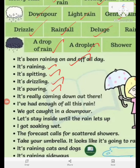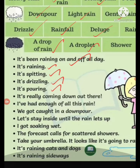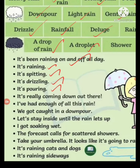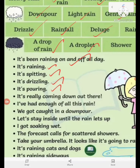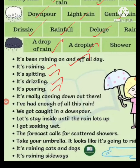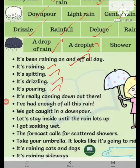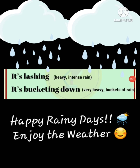'The forecast calls for scattered showers — take your umbrella.' 'It looks like it's going to rain.' 'It's raining cats and dogs' — this is also an idiom. 'It's raining snow sideways.' 'It's slashing.' 'It's bucketing down.' Thank you for listening, may God bless you all.